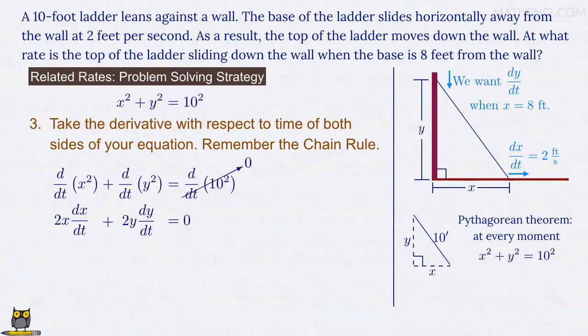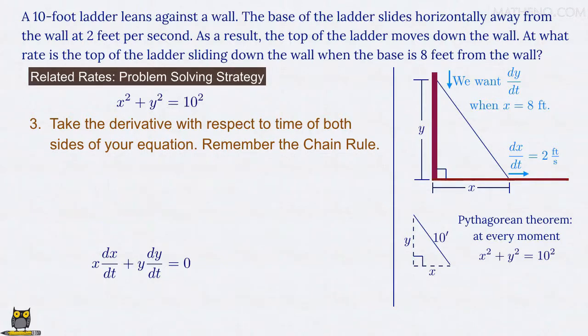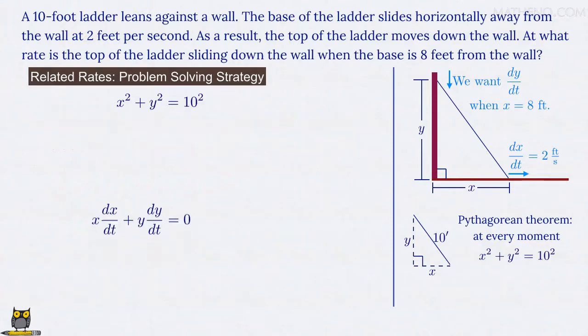With the equation we have here, we can divide both sides by 2 to get x times dx/dt plus y times dy/dt equals 0. And with that, we have the relation between dx/dt and dy/dt that we need, and so we're done with the third step of our strategy.